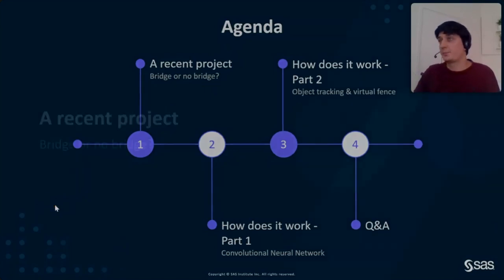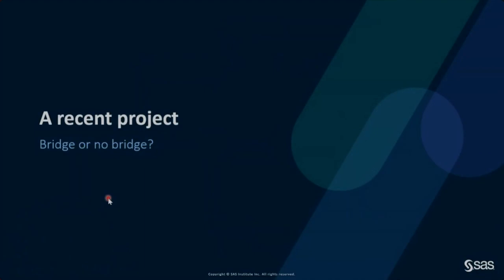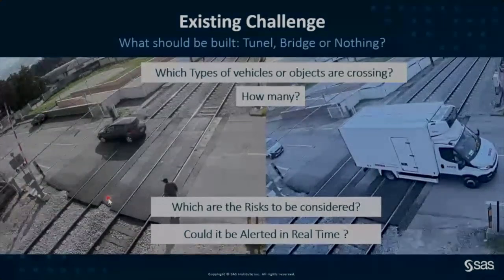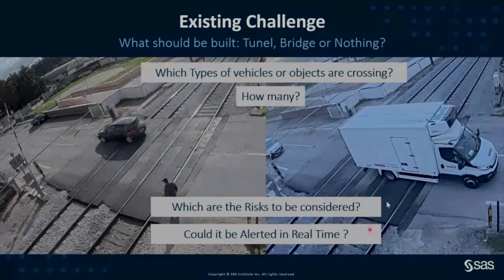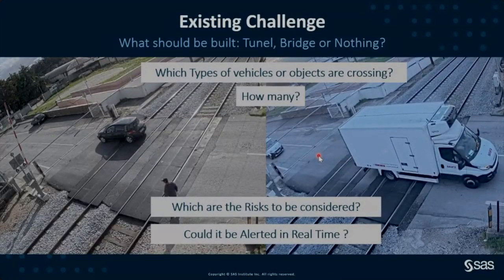We were contacted by a customer whose business objective was to decide whether or not to build a bridge at a specific location. Talking with the customer, we discovered the decision could be made by knowing the amount of traffic near a railway crossing. Knowing the traffic volume was a crucial point, alongside other factors like budget.